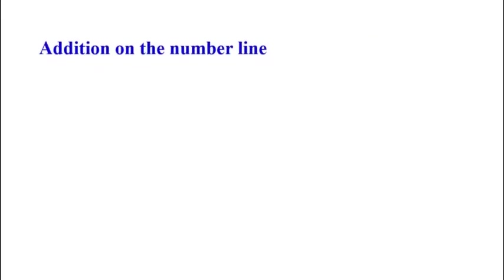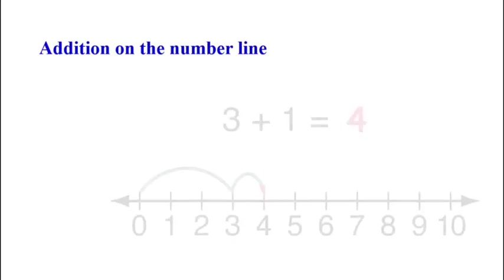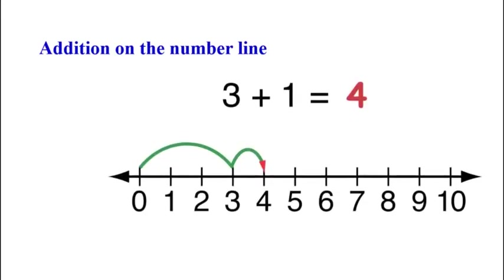Now let us discuss about addition on the number line. 3 plus 1 is equal to 4. First we come to the point 3, then plus 1 means we move towards the right side by 1 unit, and we reach at 4. So 3 plus 1 is equal to 4.